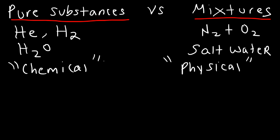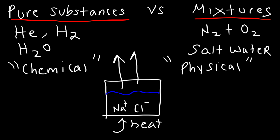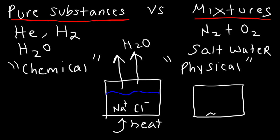Take salt water as an example. Imagine a beaker with water, sodium ions, and chloride ions. If you add heat, eventually all of the water molecules will boil off, and you'll be left with a dry solid residue — table salt, sodium chloride. By applying heat you can boil off the water, and solid sodium chloride remains because it has a very high melting and boiling point. This is a physical process.